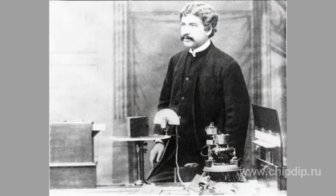An early form of a coherer based on the poor contact effect was invented by Jagdish Chandra Bose in 1899. This device is composed of a small metal cup filled with mercury, covered with an extra thin insulating oil film, with a small iron disc mounted above its surface. By means of an adjusting screw, the bottom edge of the disc is brought into contact with the oil at low pressure, so that the oil film is not pierced. Its operating principle is not yet fully known.